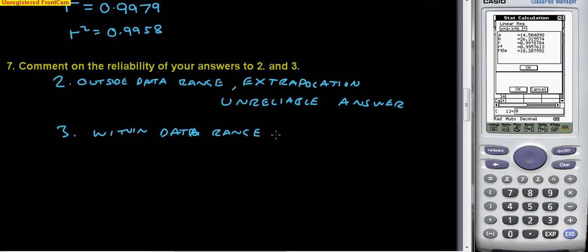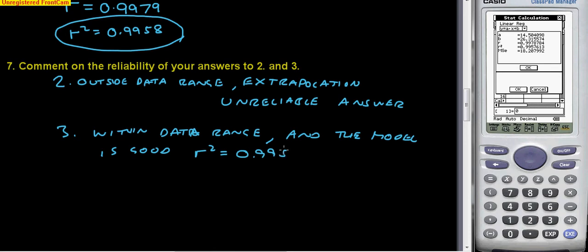Now in this case it is, and we know that because our r² value is very close to one. So within the data range, question three, and the model is good, and because r² equals that, therefore our answer is reliable.